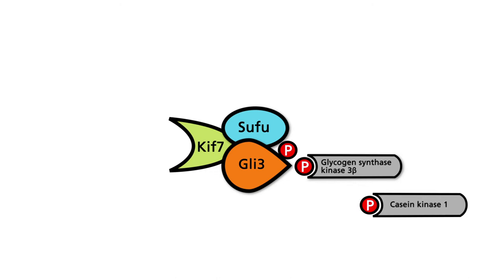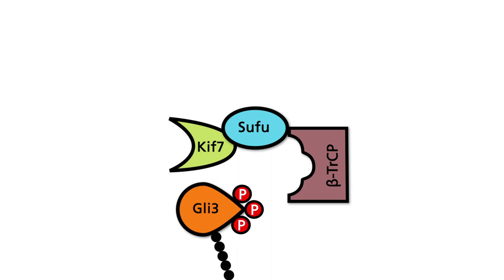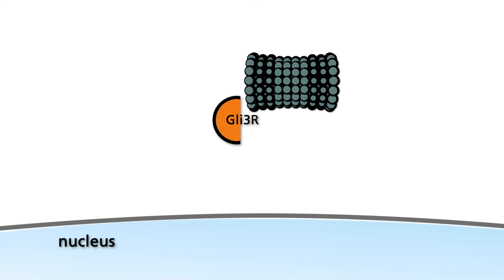Phosphorylation of GLI III leads to the recruitment of the beta-TRCP subunit of the SCF type E3 ligase. Subsequently, GLI III is ubiquitinated and directed to the proteasome. In the proteasome, the C-terminal part of GLI III is degraded. The resultant fragment, abbreviated GLI III R, acts as a transcriptional repressor.